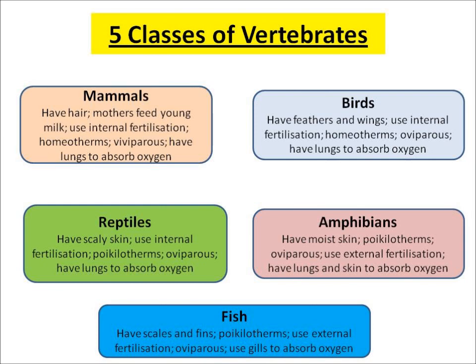The next class is birds. Birds have feathers and wings. They use internal fertilization like mammals and they are also homeotherms. However, they are oviparous, which means the mother lays eggs. They also have lungs to absorb oxygen.